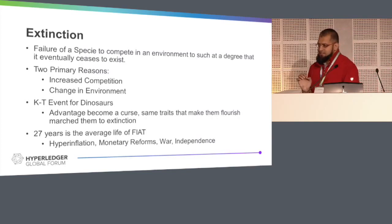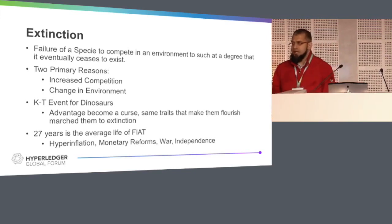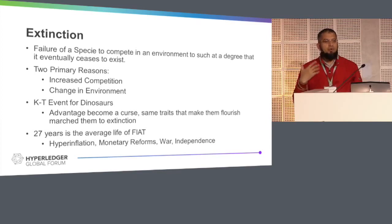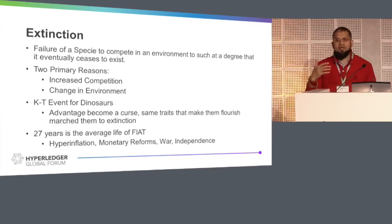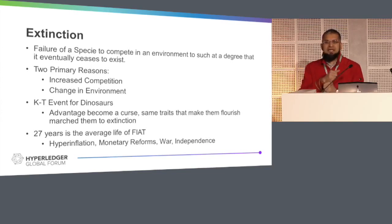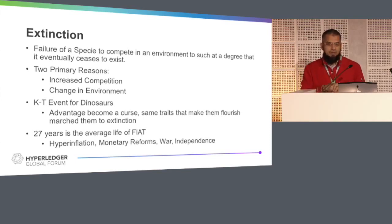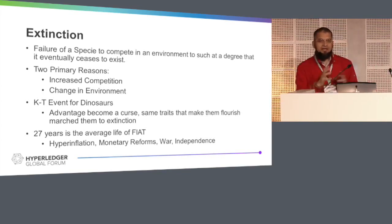We need to talk about extinction as well — it's very important. When the KT event happened, all of the traits that were good for dinosaurs became very negative for them. They were huge, needing more food and oxygen and everything. Because of their strength they were ruling the world. When the asteroid hit and ashes blocked out the sky, there was less oxygen and less food. All of the ingredients that were supportive of dinosaurs suddenly started working against them and they got extinct. This is what's happening with fiat as well. This KT event has already started with the Lehman Brothers bankruptcy and the financial crisis of 2008 — all of the things that were supporting fiat are now working against it.